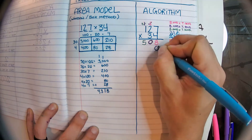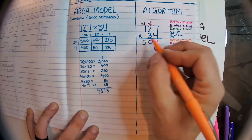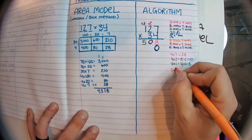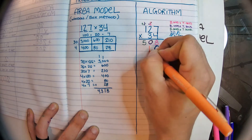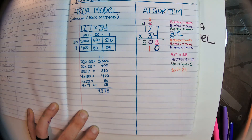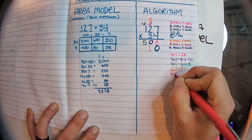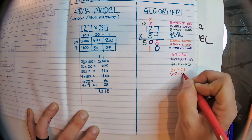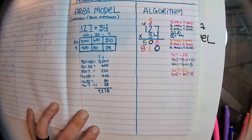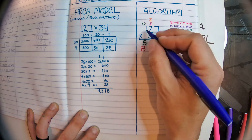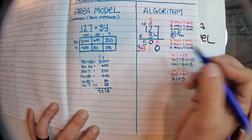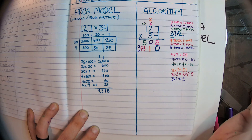Now, second line ones place zero — we go ahead and put that in. Then bottom tens times top ones: three times seven is 21, so we put the one down and carry the two above the tens. Next, bottom tens times top tens: three times two is six, plus the two we carried equals eight. Finally, bottom tens times top hundreds: three times one is three.